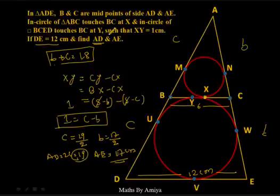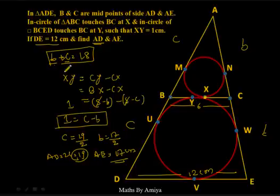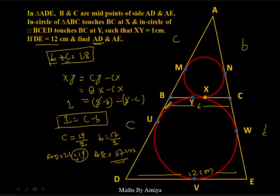If you have the same question with different data, remember: B + C equals the sum of opposite sides (12 + 6 = 18), and C − B is the XY difference (= 1) when X is closer to C; it becomes B − C when X is closer to B. Solve the two equations to get C and B, then find 2C or 2B for your final answer.